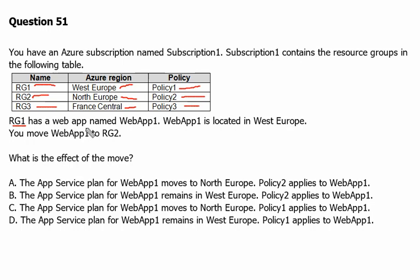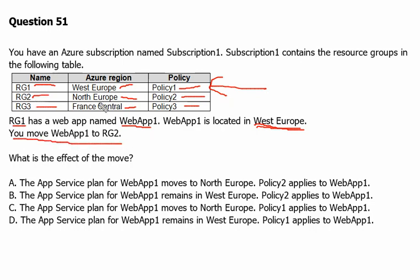RG1 has a web app named Web App 1 inside it, and Web App 1 is located in West Europe. You move Web App 1 to RG2. RG2 has a different region — it is in North Europe.